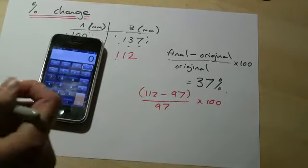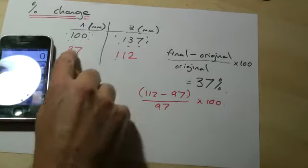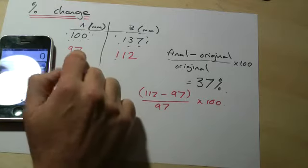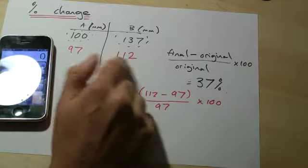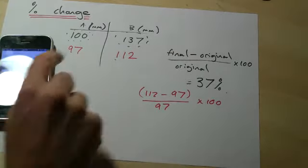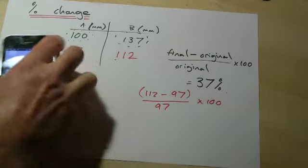Actually what I should say is, let's just make a quick estimate. It's gone up by about, if we imagine that's 100, roughly 100, that's roughly 110, it's gone up by about 10%, so I'm expecting my value to be somewhere around that.